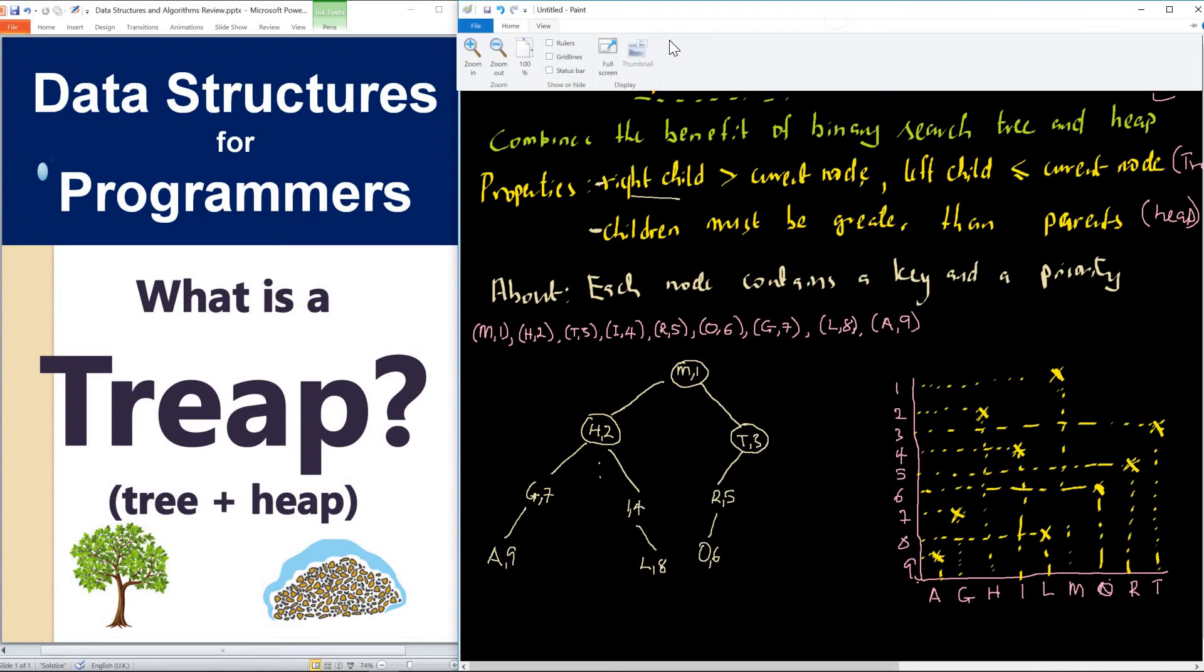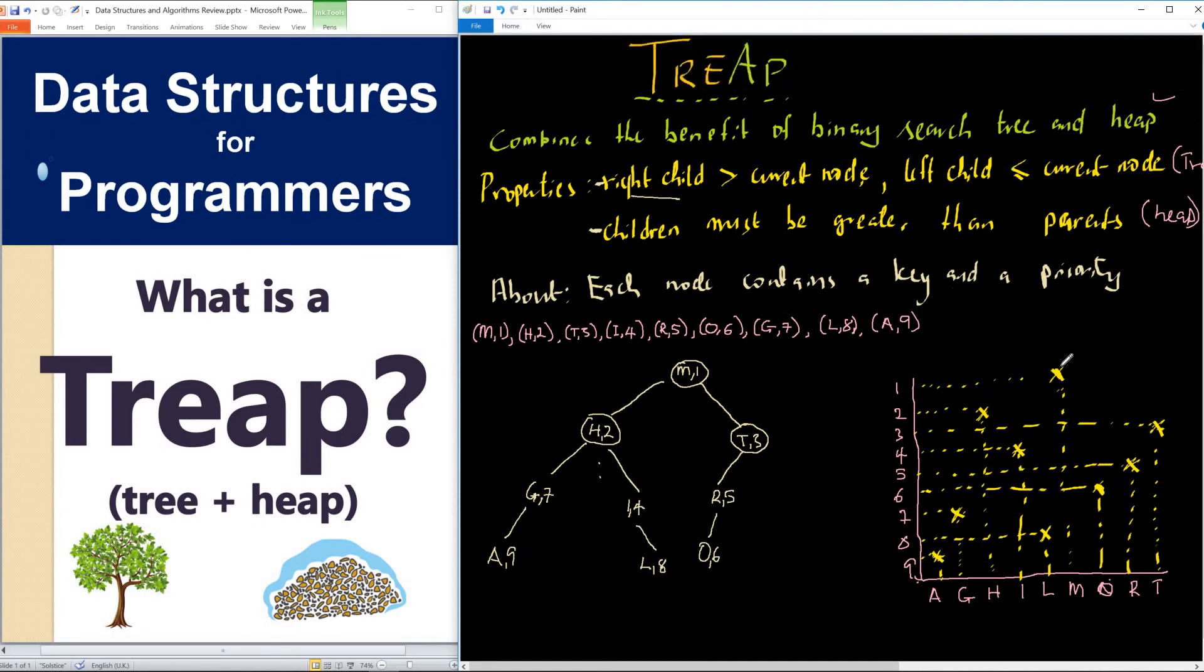Permit me to just circle them with white. Let me just circle this. 2, 3, 4, 5, 6, 7, 8, 9. So this is a graphical representation of a Treap.